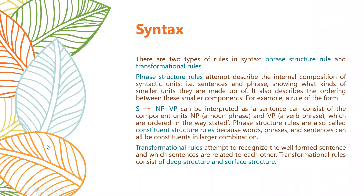We discussed the basic definition of syntax and also syntactical rules. We can see that there are two different types of syntactical rules: one is phrase structure rules and another is transformational rules. Phrase structure rules — if we want to talk about the very basic sentence structure — we can see that we have a noun phrase (NP) and a verb phrase (VP). These phrase structure rules are also called constituent structure rules because they are combinations of different words, phrases, and sentences — all constituents, or different ingredients of a sentence.